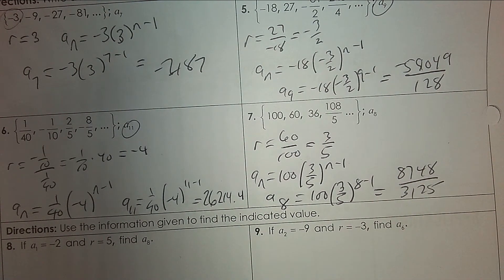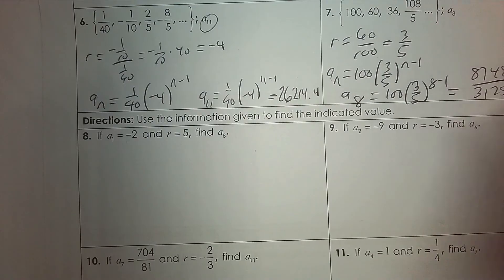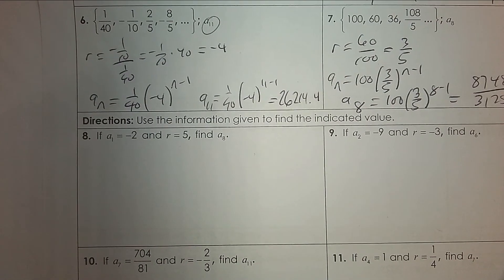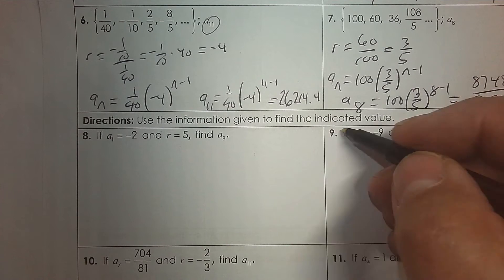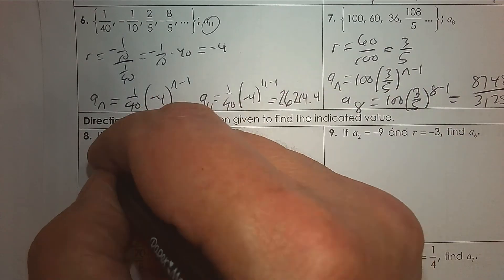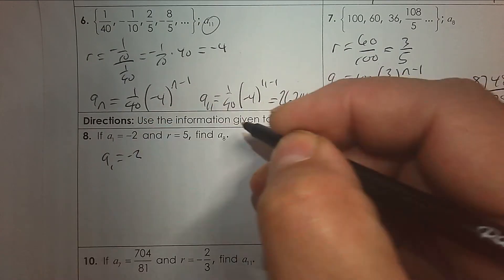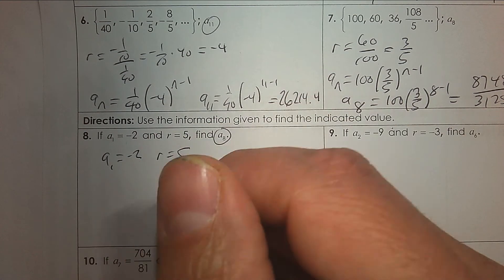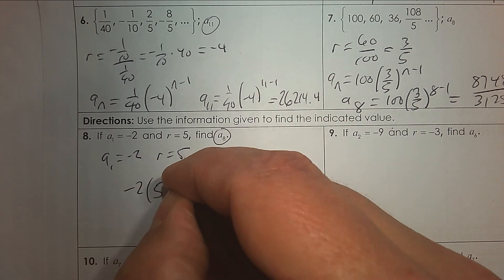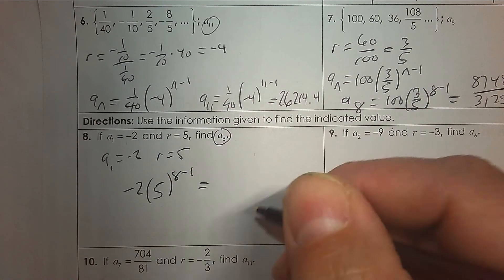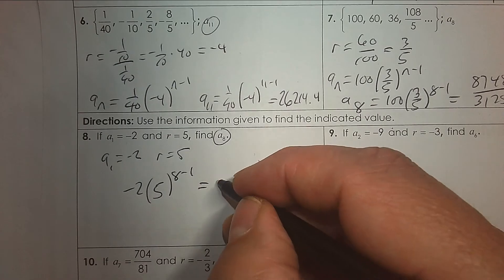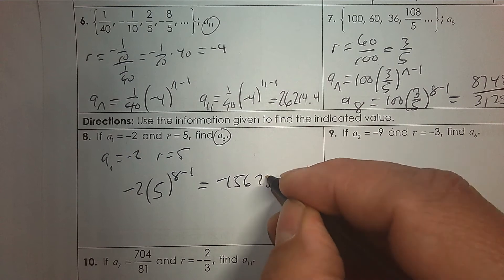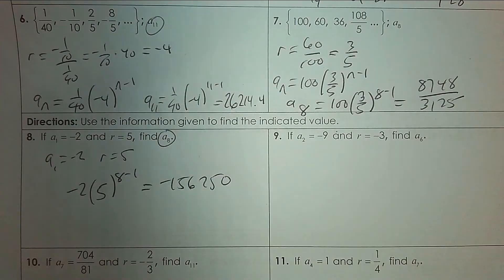Number 8: use the information given to find the indicated value. You're told the first term is negative 2 and the ratio is 5. To find the eighth term: negative 2 times 5 to the 8 minus 1, then solve it — negative 156,250.